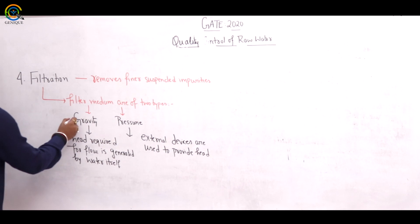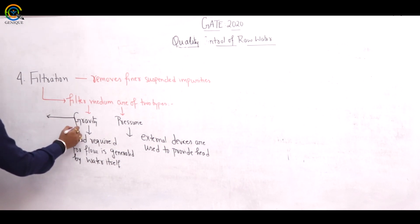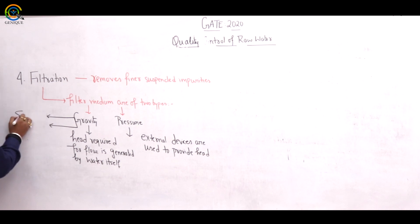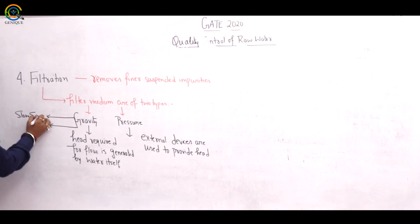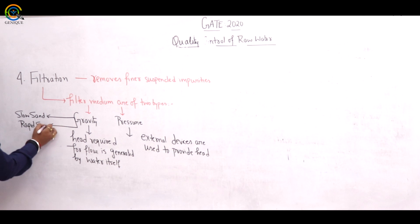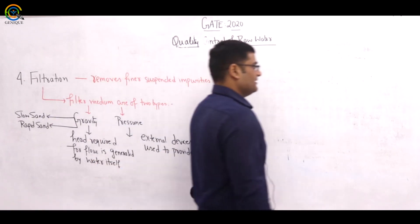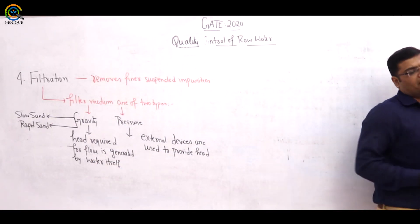Gravity filter has two further parts: the first one is known as slow sand filter, and the second one is rapid sand filter. These are the two types of gravity filters. Now, what is the principle of the filtration process?